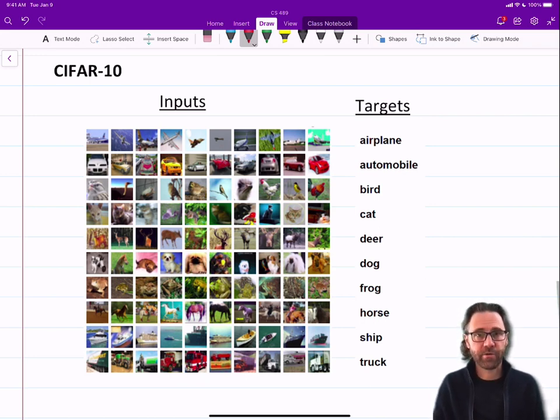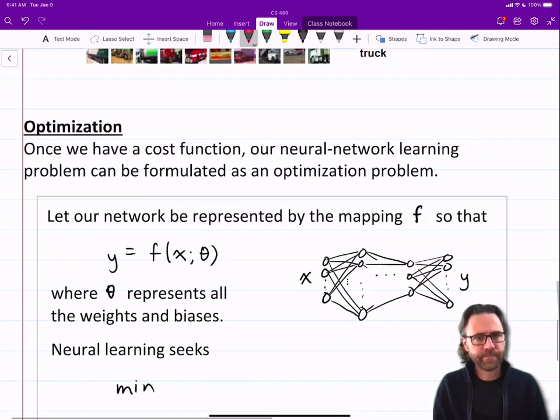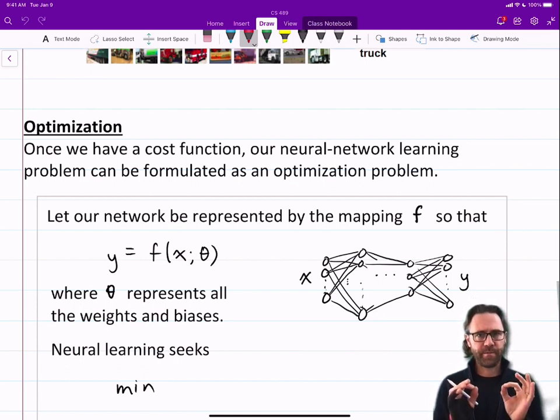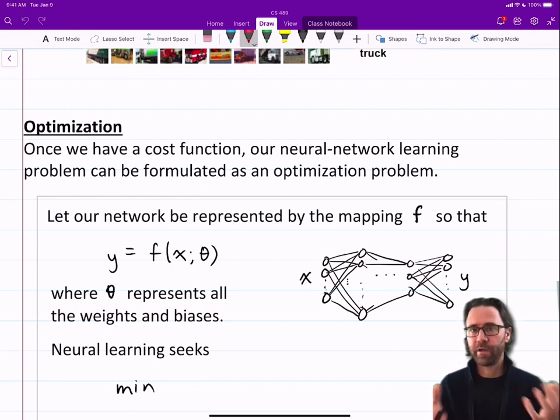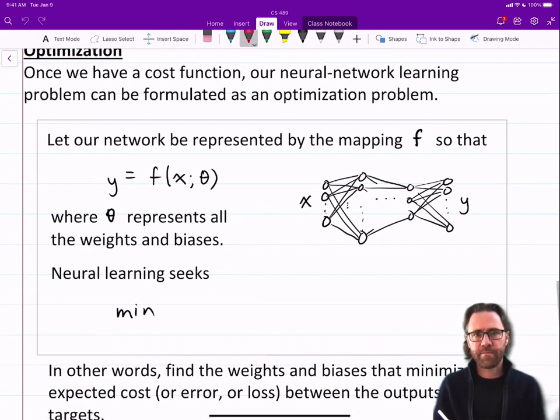Optimization. Once we have a cost function, our neural network learning problem can be formulated as an optimization problem. A lot of neural networks, a lot of neural network programming and design and magic comes down to optimization.